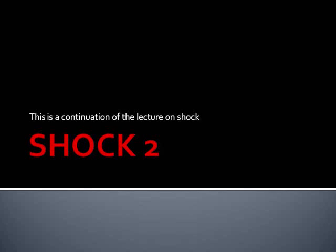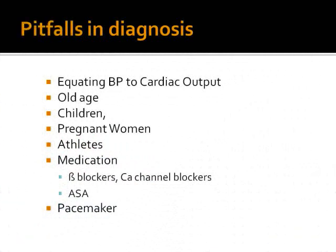This is a continuation of the lecture on shock. We will now look at some of the pitfalls that we are likely to encounter in the management of different kinds of patients in shock. The first pitfall is when we equate blood pressure to cardiac output. Blood pressure does not equal cardiac output, and we need better ways of checking for perfusion, like using a urinary catheter and monitoring other signs.